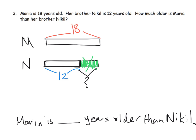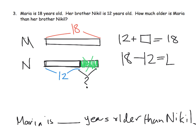By intentionally making the tape diagrams the same length, it actually helps us see where the answer we're looking for is — which is right here. We could say it's 12 plus what gives us 18, or 18 minus 12 equals what? And of course, we know the answer is 6.